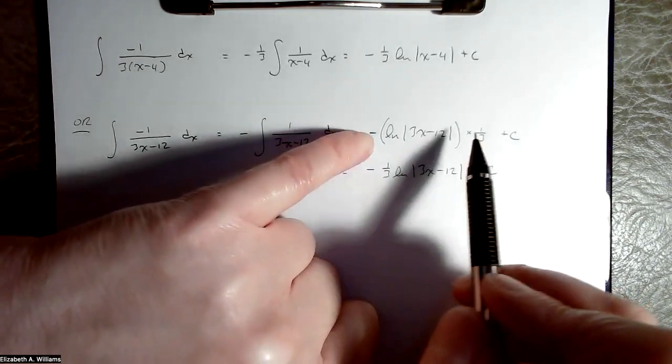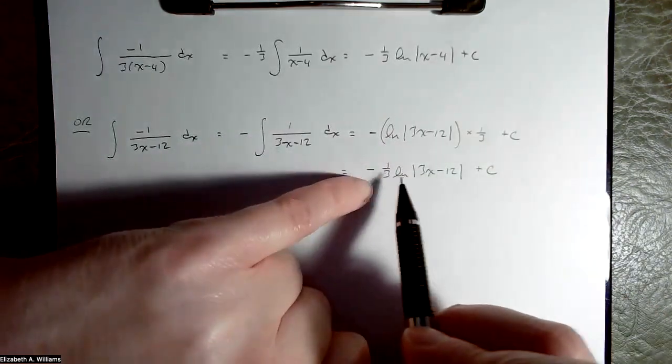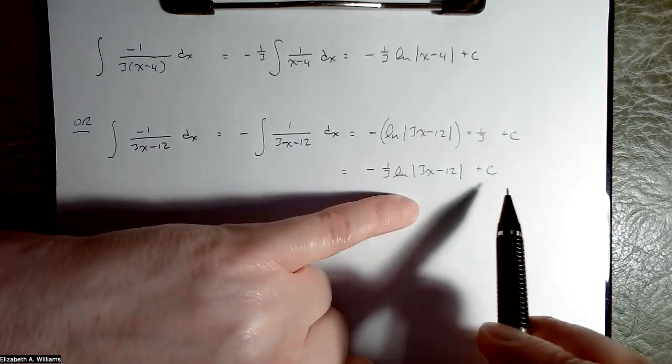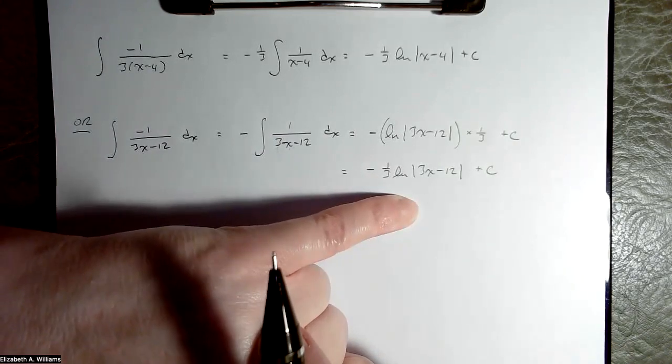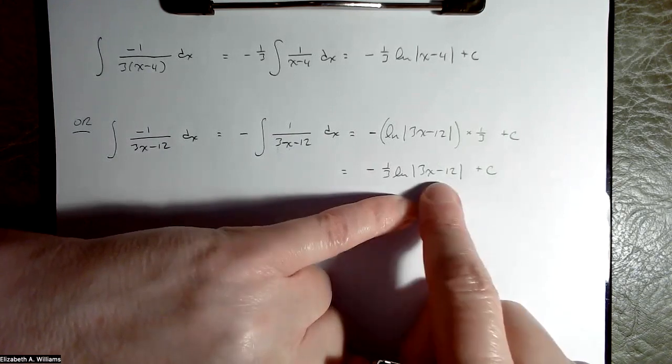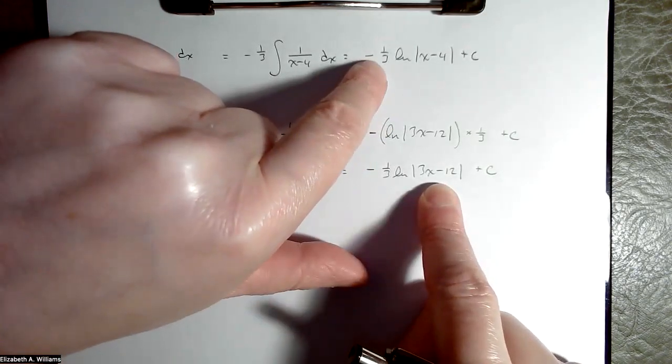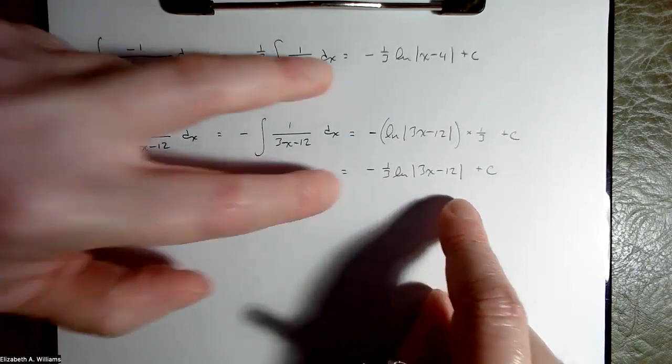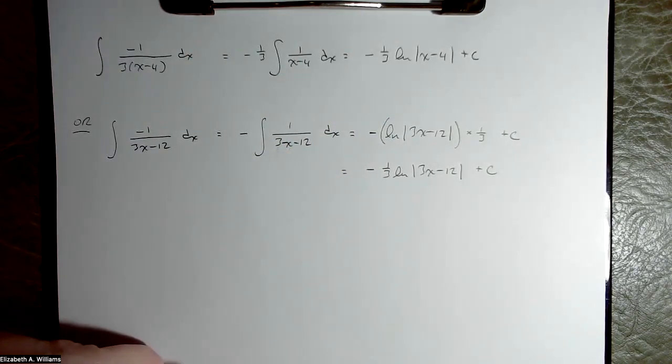If you differentiate this phrase, the anti-derivative, differentiating natural log gives you 1 over the argument, so 1 over the 3x minus 12. But then you have to multiply by the derivative of the argument, which is 3. And if you multiply by 3, that will interact with the 1/3, giving you a 1 and no stray extra numbers. That's why you have to put the 1/3 in.